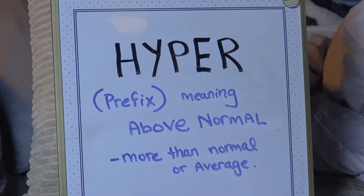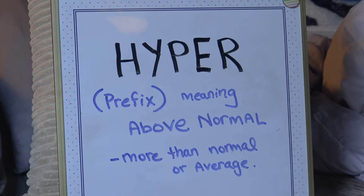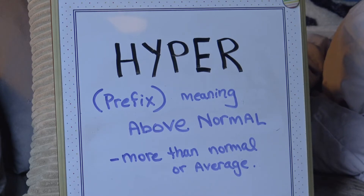Hyper is also a prefix, so the beginning of a word. It means above average, above normal, more than average. Hyper — it's up, above normal.